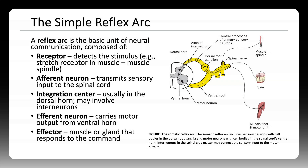A simple reflex arc involves five components: a receptor that detects a stimulus, an afferent neuron that carries the signal to the spinal cord, an integration center usually in the dorsal horn, an efferent neuron that transmits a motor command, and finally an effector such as a muscle or gland.